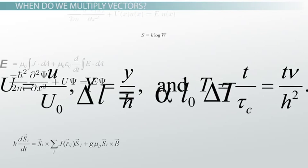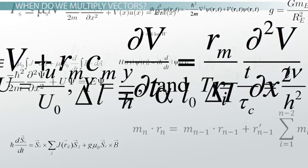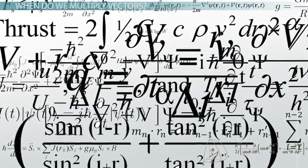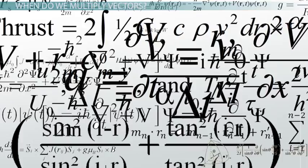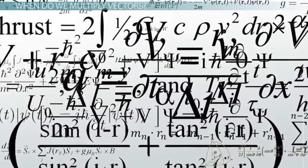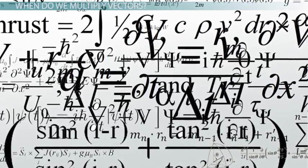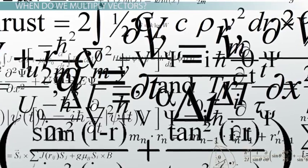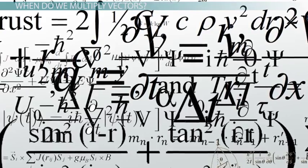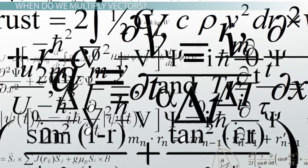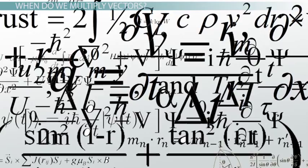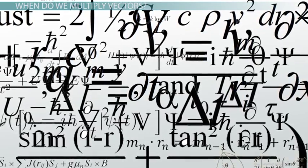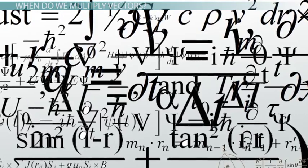There are hundreds of equations in physics, and they contain a mixture of scalars and vectors. Whenever two vectors are multiplied together in one of these equations — like force multiplied by displacement, which is work, or the velocity of a charge multiplied by a magnetic field, which is related to the magnetic force — we can multiply them in two different ways: vector multiplication, otherwise known as a cross product, and scalar multiplication, otherwise known as a dot product.